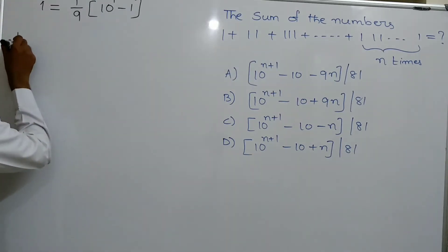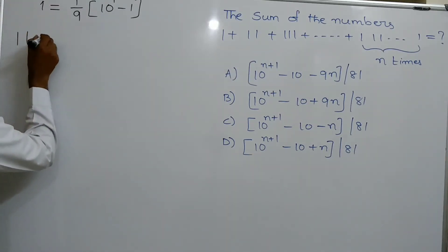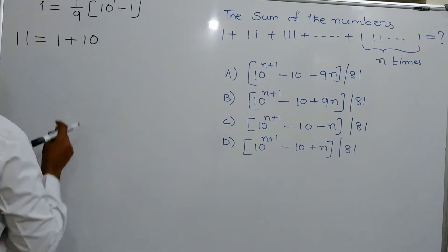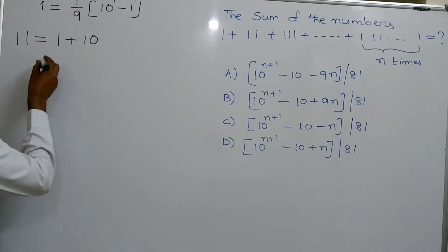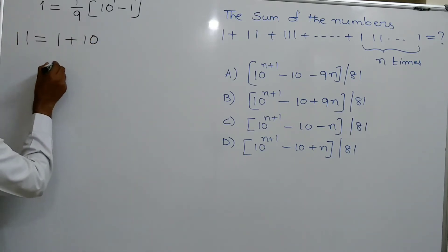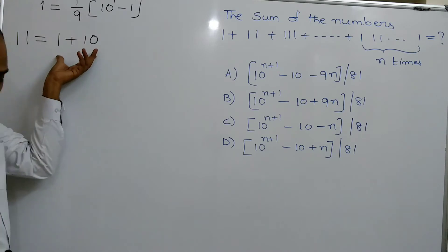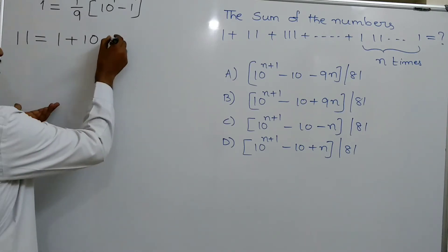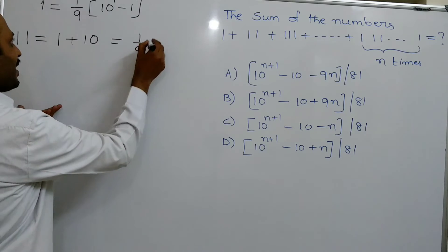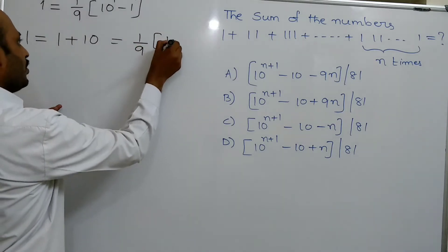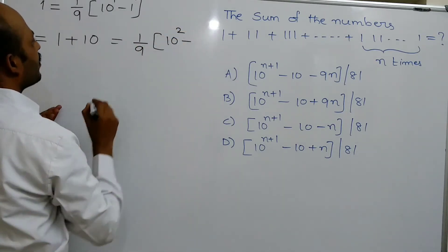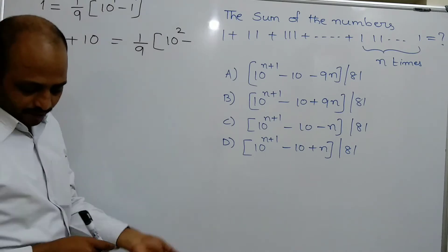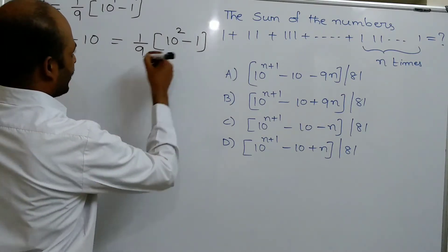Now 11 can be written as 1 plus 10. And 1 plus 10 can be written as 1 by 9 into (10 squared minus 1), because 100 minus 1 is 99, and 99 divided by 9 gives 11.